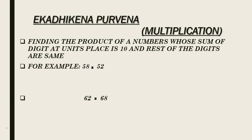We have learnt to apply Ekadhika Purvena for addition as well as for squaring. Now let us learn to apply Ekadhika Purvena for multiplying numbers or for finding the products of numbers. Let us take a note on the rule that we need to follow: finding the product of a number whose sum of the digits at the units place is 10 and the rest of the digits are same. For example,